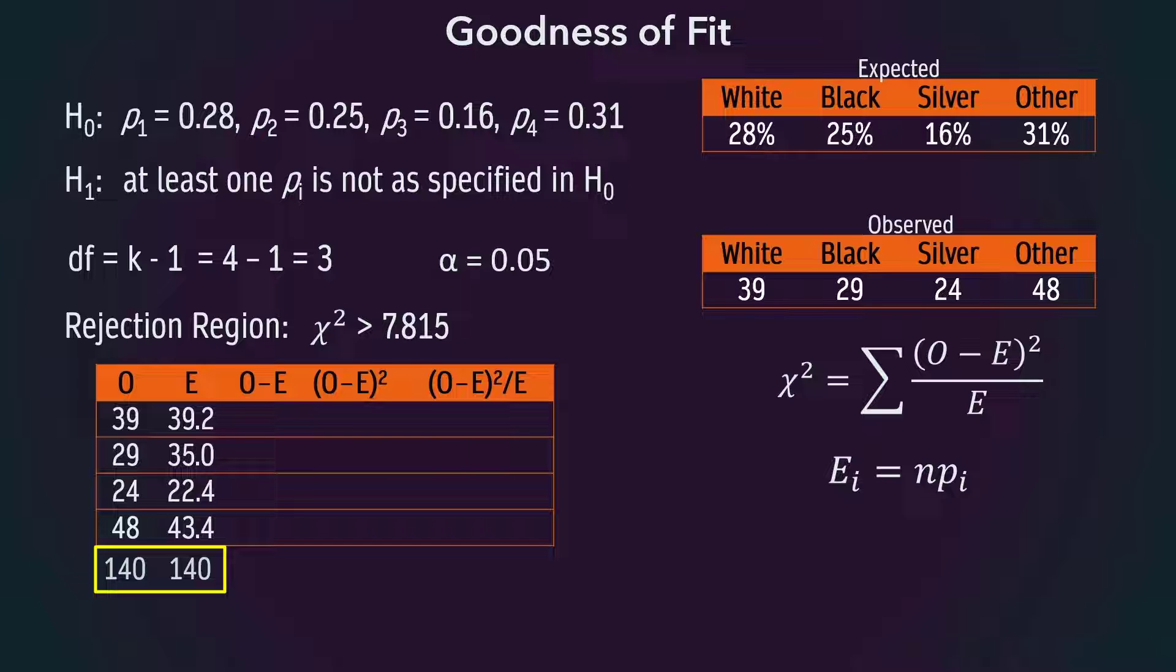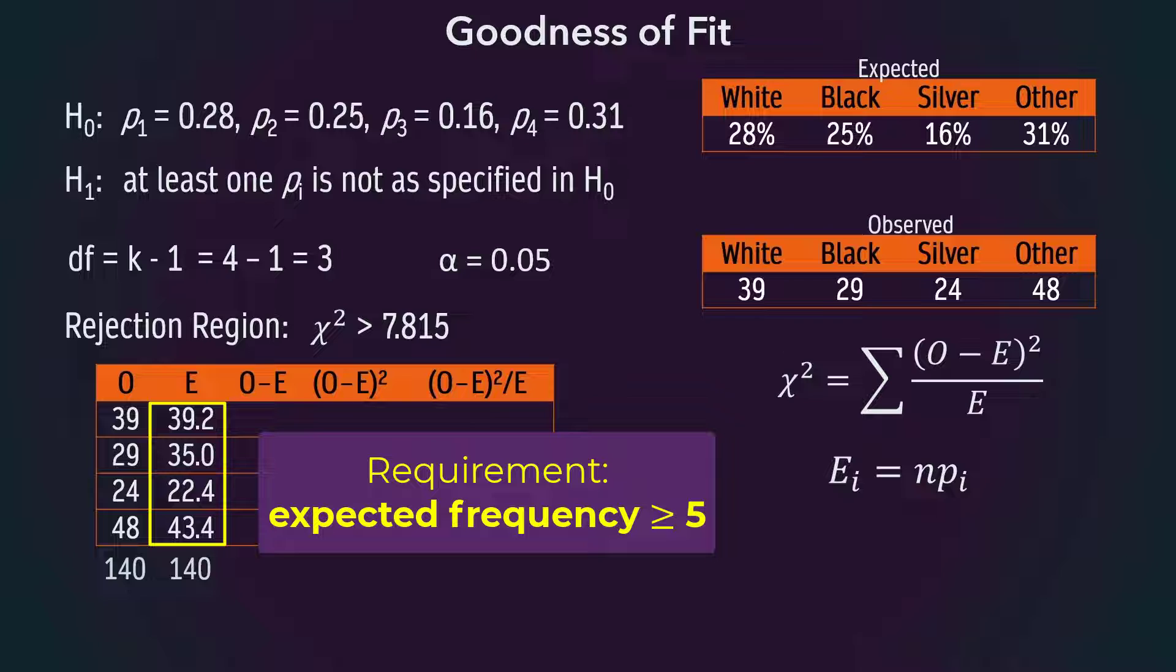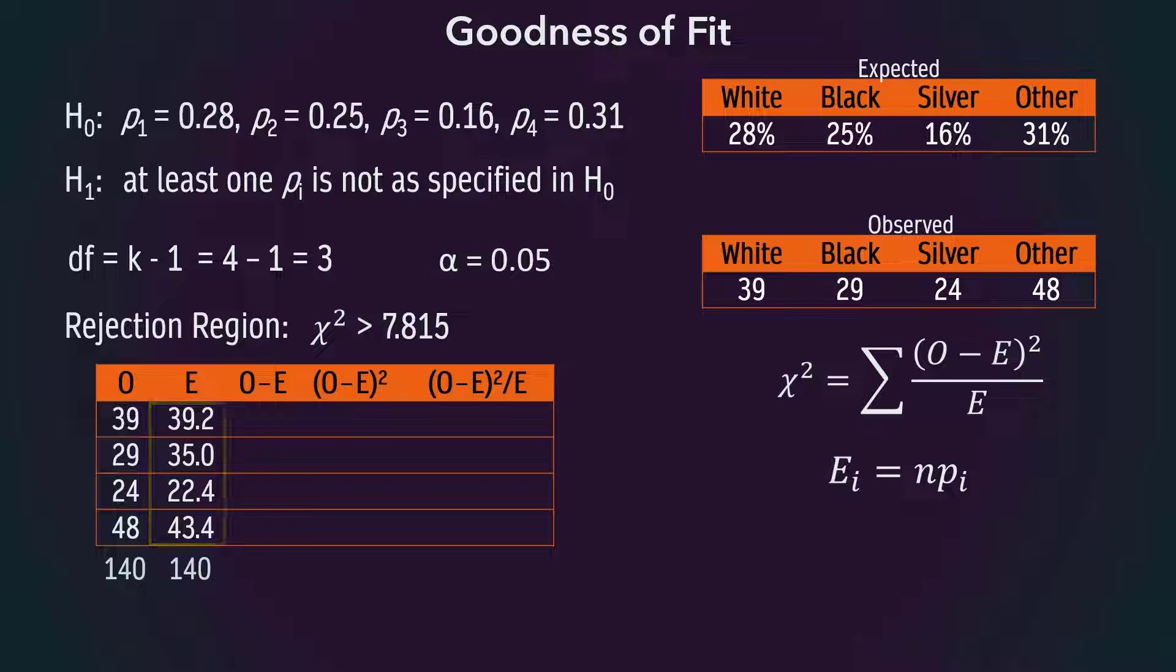Note that the goodness-of-fit test requires each expected cell frequency to be at least 5. If the expected cell for a category has a frequency less than 5, we should combine that category with another category to satisfy that requirement. Since all the expected values are greater than 5 here, that requirement is satisfied.